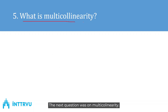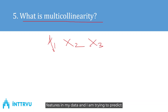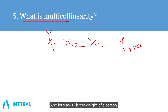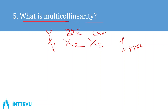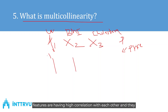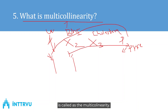The next question was on multicollinearity — what is multicollinearity? Multicollinearity is a scenario where you have multiple features that are highly correlated with each other. For example, if x1 is a person's weight, x2 is their BMI, and x3 is their cholesterol value, and you are predicting insurance price — weight and BMI are highly correlated. When two or more features have high correlation with each other and they are also impacting the output, that is called multicollinearity.